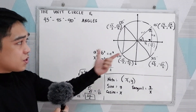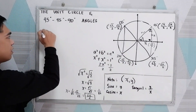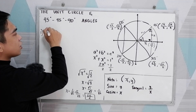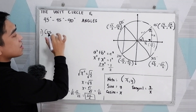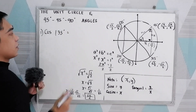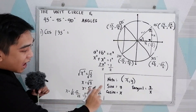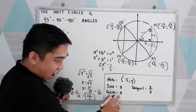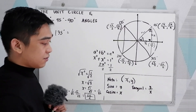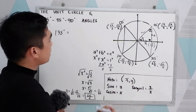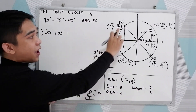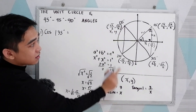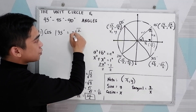Now how are we going to apply this? Let's say your task is to find cosine 135 degrees. Note that sine indicates our y, cosine indicates our x, and tangent indicates y over x. Our coordinate is (x, y). Locate 135 degrees — cosine indicates x, so that is negative square root of 2 over 2.